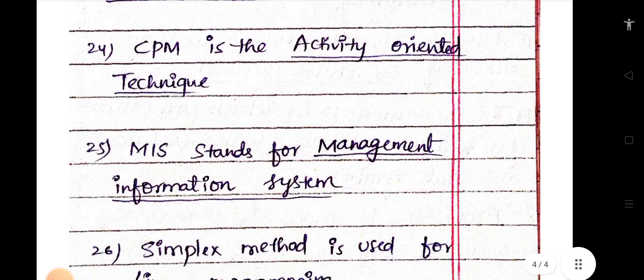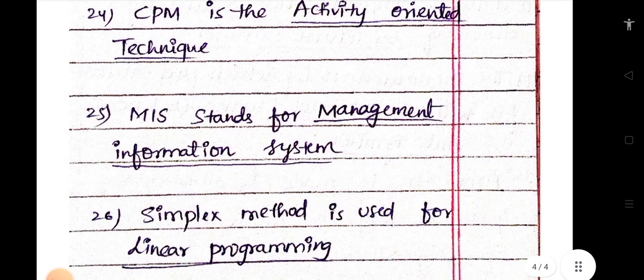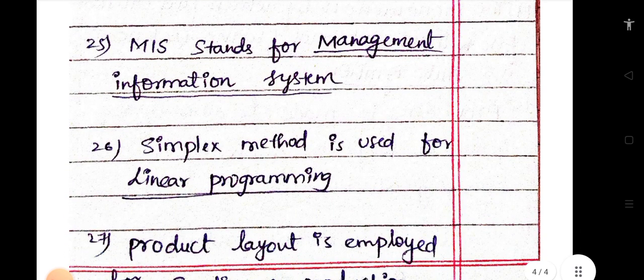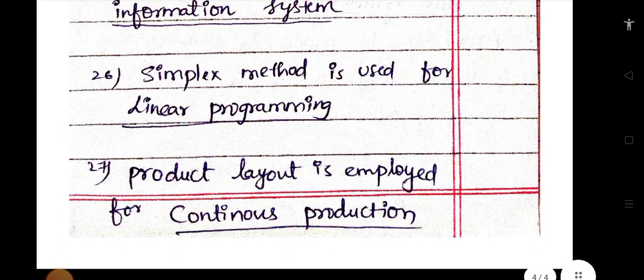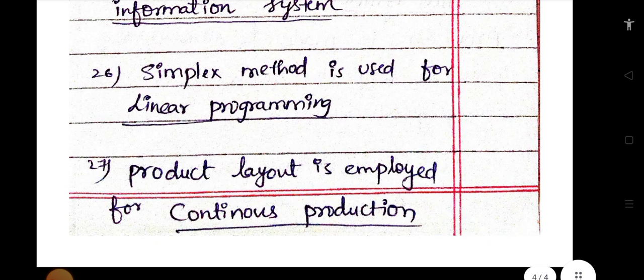PERT and CPM are techniques to determine the project status. CPM is the activity-oriented technique. MIS stands for Management Information System. Simplex method is used for linear programming. Product layout is employed for continuous production. In total, there are 27 questions, and these repeated questions will be posted on the Telegram channel.